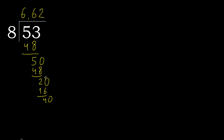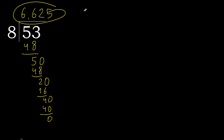40: 8 multiplied by 5 is 40. Subtract: 40 minus 40 is 0. Therefore finished. 53 divided by 8 is shown here.